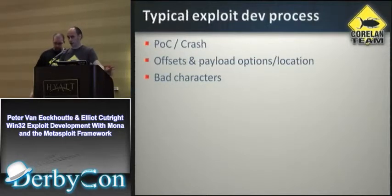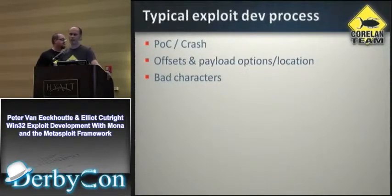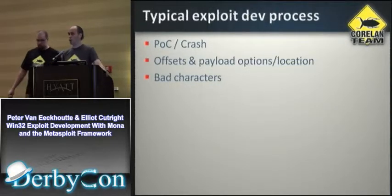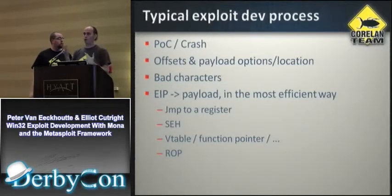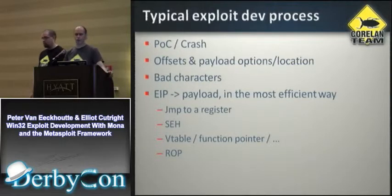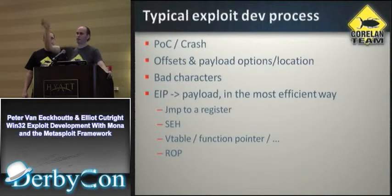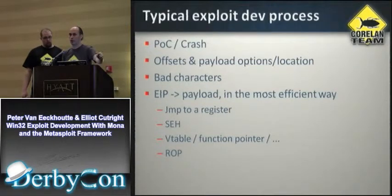On exploitDB you often see exploits that just use an alphanumeric encoder payload — that's probably safe, but it's huge. It's highly recommended to figure out what the bad characters are. Then when we figure that out, we'll try to find a trampoline — a way to go from that crash and actually land in our payload. Depending on the exploit, you can jump to a register, or if you've overwritten the exception handler you can do some kind of pivot. There are all kinds of ways to redirect the flow of the application to your arbitrary payload.